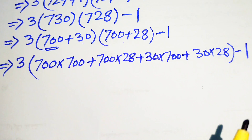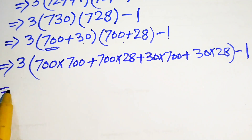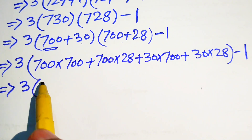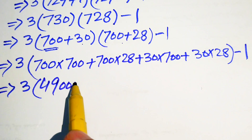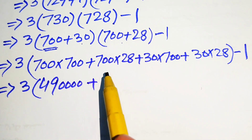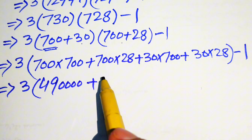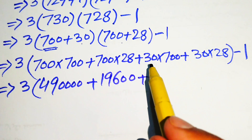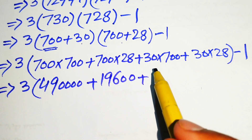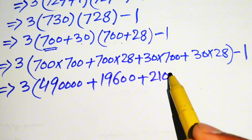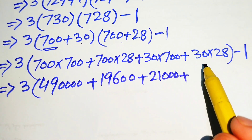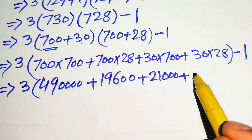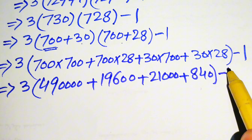We simplify the products: 700 times 700 equals 490000; 700 times 28 equals 19600; 30 times 700 equals 21000; and 30 times 28 equals 840. This is minus 1.